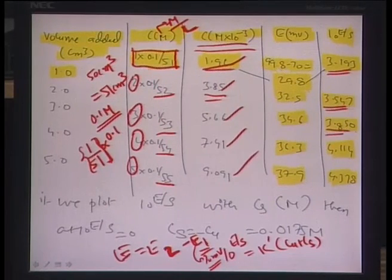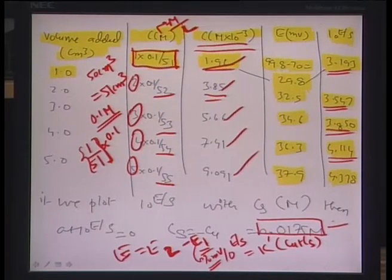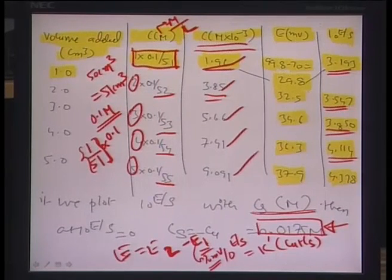When we take that plot and find the concentration where 10^(E/S) equals zero — the x-intercept — it comes out to be 0.0175 molar. That is how you use the Gran plot to gauge the unknown concentration of Cu²⁺ in the original 50 cm³ solution.